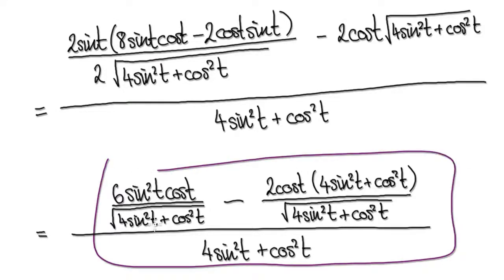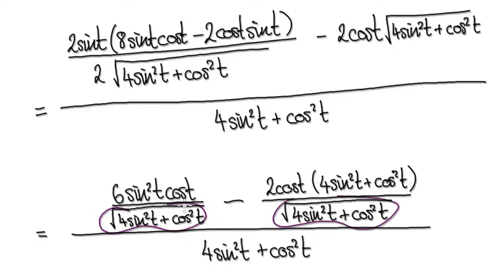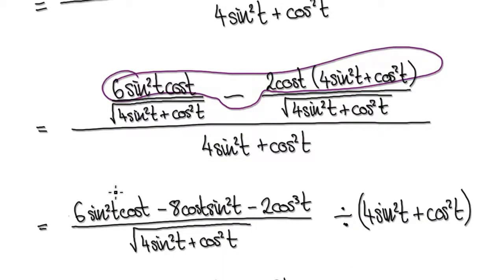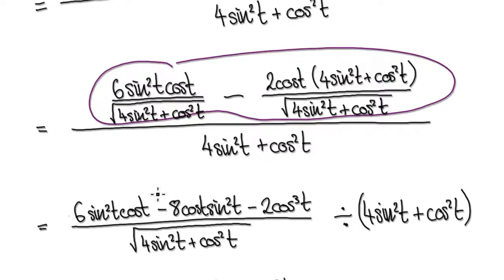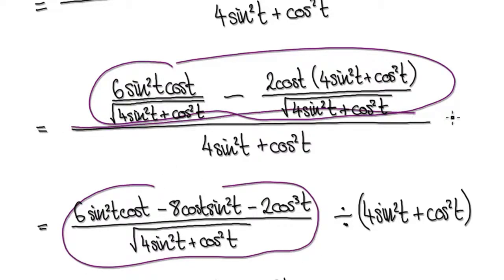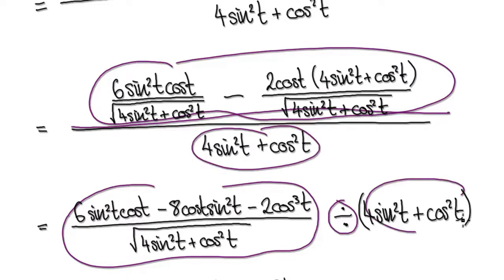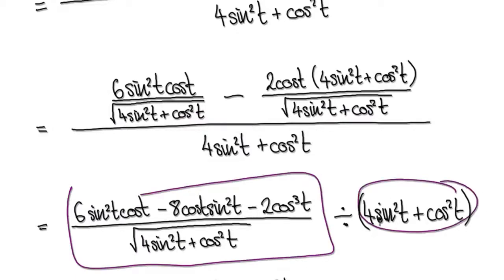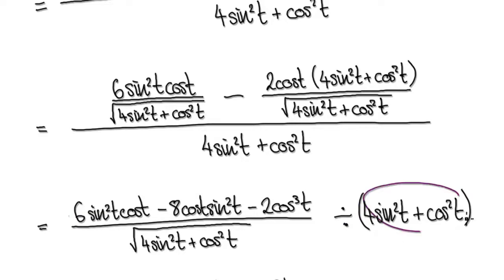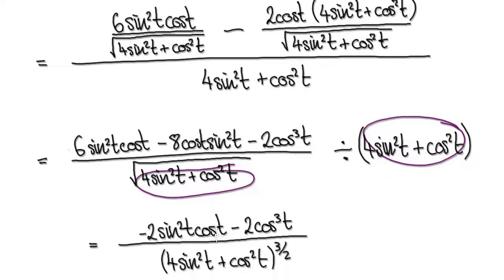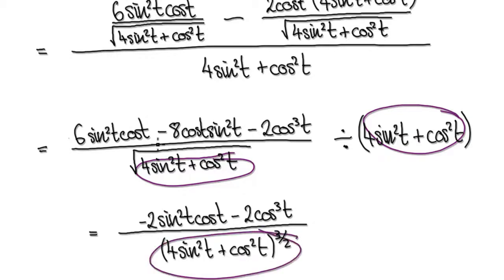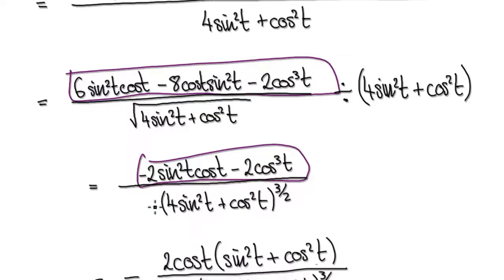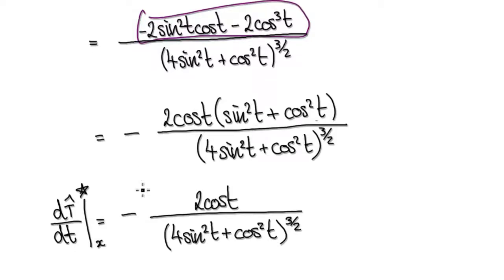The two denominators are now the same, so we can merge these together. That will give us this whole thing here for the numerator, divided by this thing here. Now you've got a fraction divided by this thing — this gets multiplied to the bottom. Notice that this is exactly the same as this thing here, so it becomes this. If you tidy up the numerator, that gives you this thing here, and tidying up further gives you this — which is the x-component.